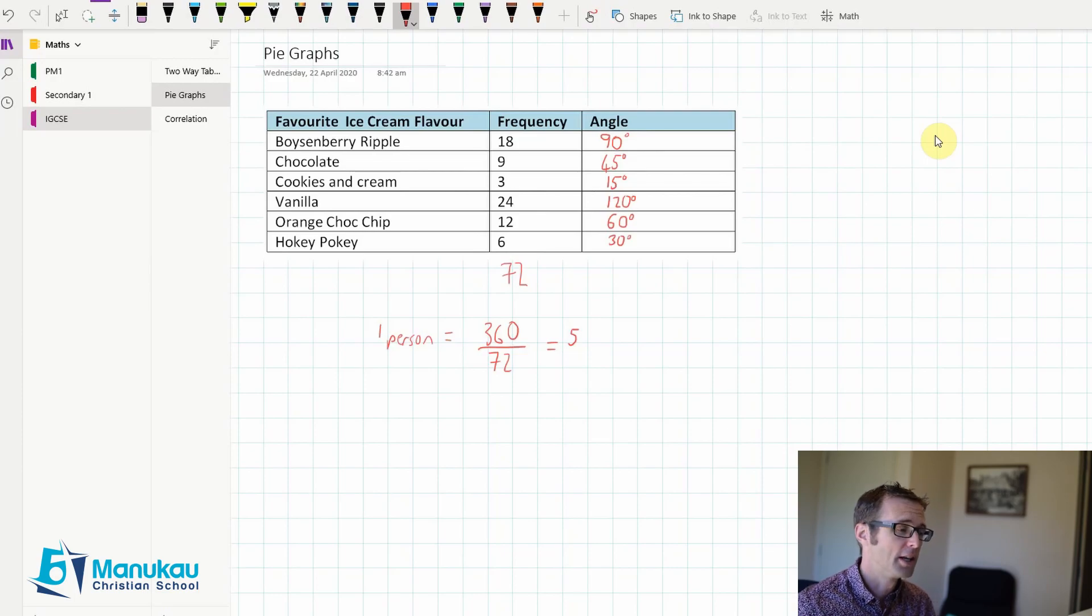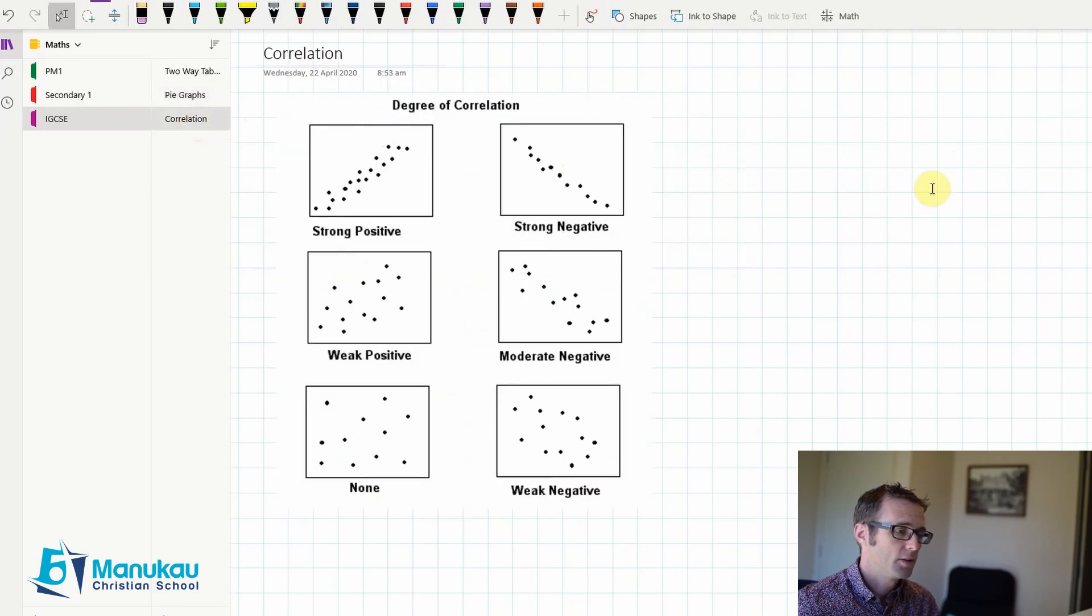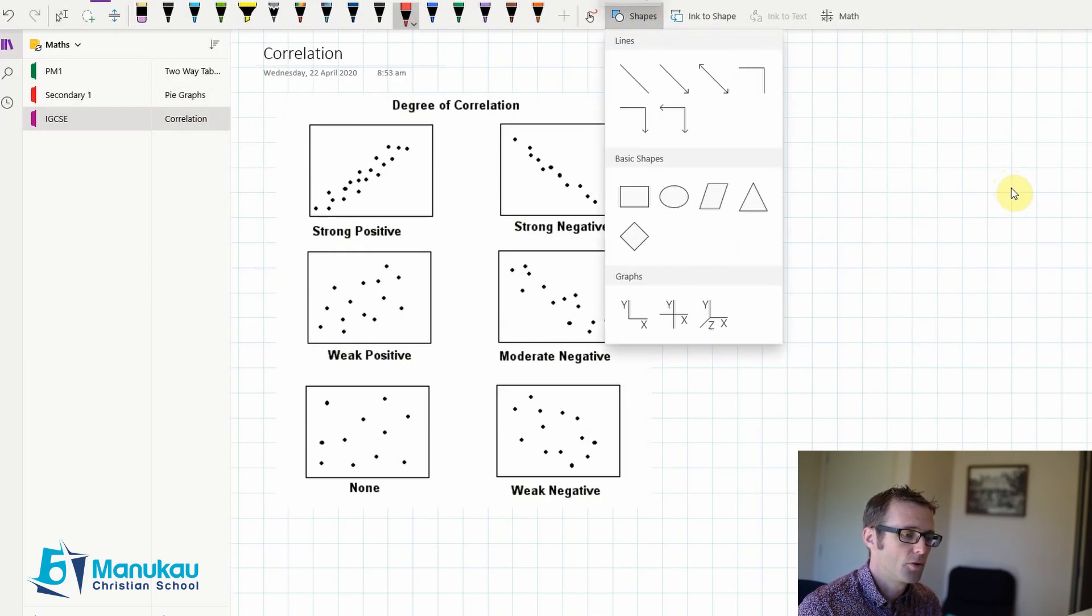Let's now move on to correlation. So, in correlation, we need to understand a few terms. So, first of all, we need to understand positive correlation.